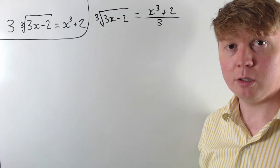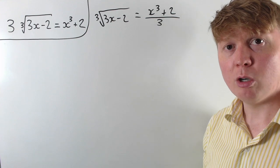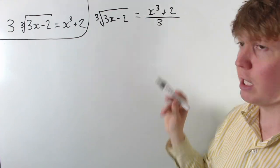At this point you might spot that on the left hand side we've got the cube root, we're multiplying by 3, we're subtracting 2, whereas on the right hand side we've got x cubed, we're dividing by 3 and we're adding 2.